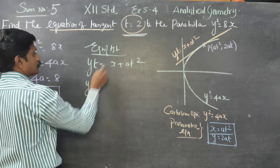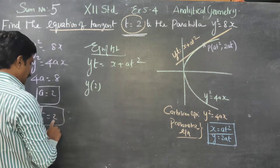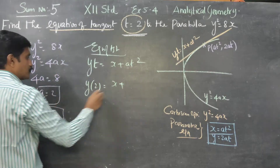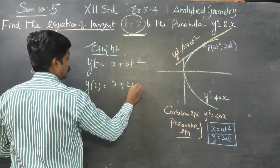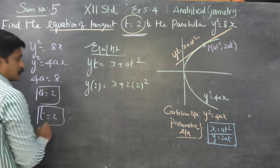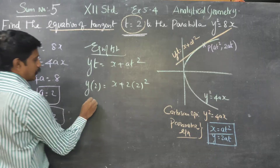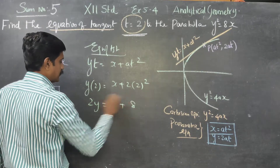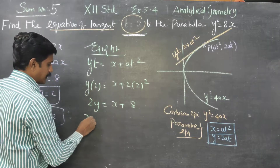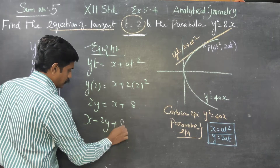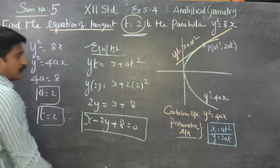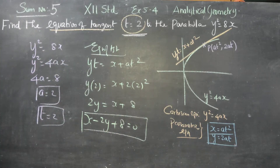Using yt equal to x plus at square: y times 2 equal to x plus 2 times 2 square. That gives 2y equal to x plus 8, or x minus 2y plus 8 equal to 0. This is the equation of the tangent using the parametric formula — that is Method 1.